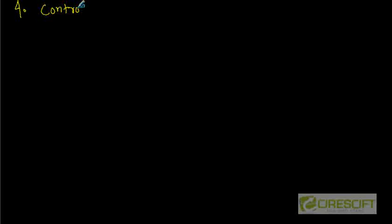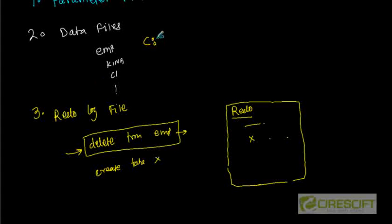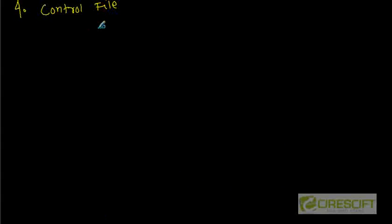Number four is the control file. The control file basically contains a directory of all other files. For example, the control file tells the instance where the database and redo log files are. If our data file is at C:\data\one.dbf and our redo log file is at C:\redo\one.dbf, then the control file will contain all information about where these data files and redo log files are located.